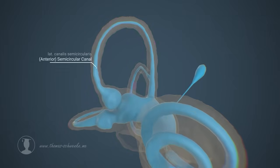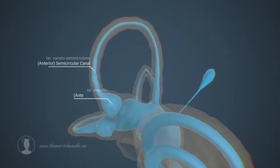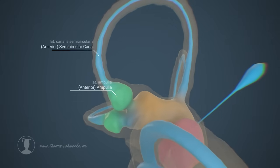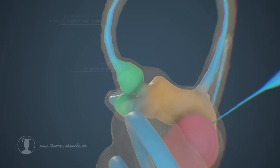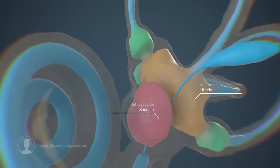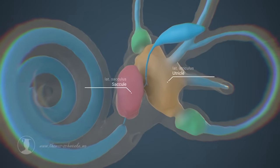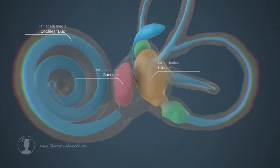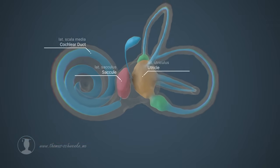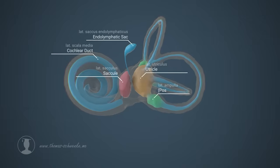The vestibular system has three semicircular canals, each with an ampulla. Two small sacs are also present in our vestibular system. The system shown here is filled with a fluid and consists of the cochlear duct, the two small sacs and their connections, the endolymphatic sac and the semicircular canals with the ampullae.